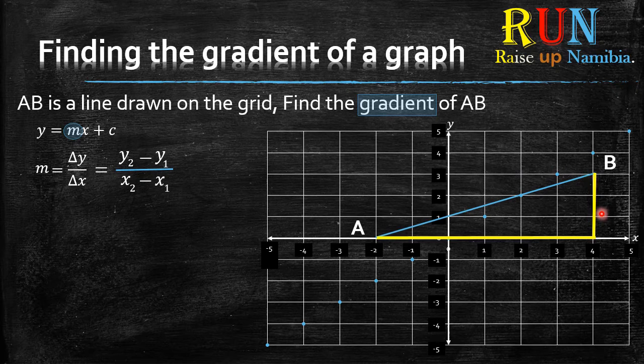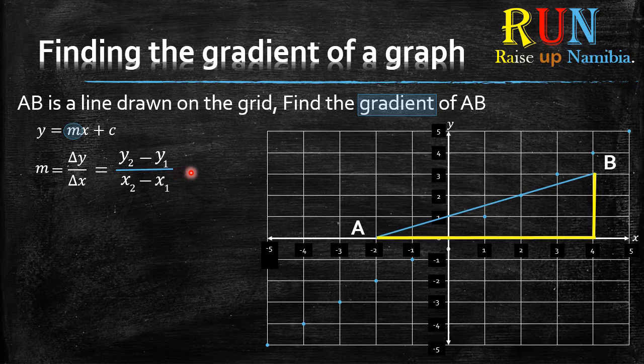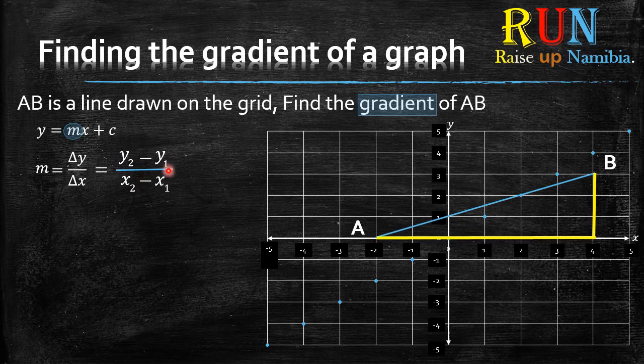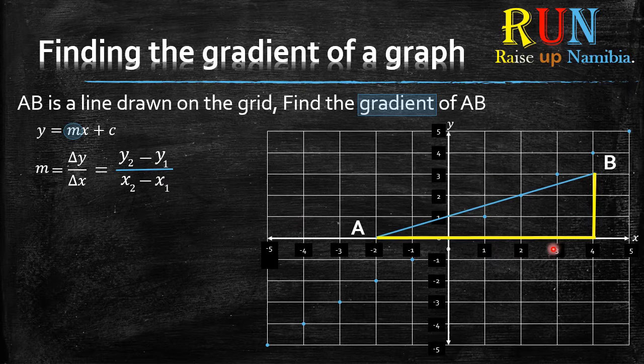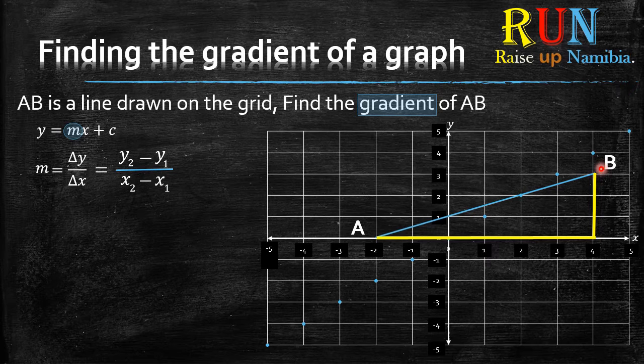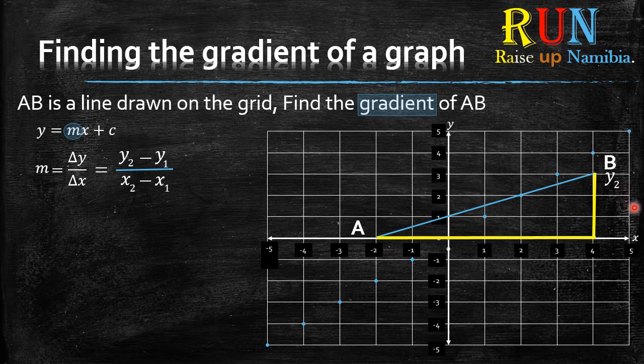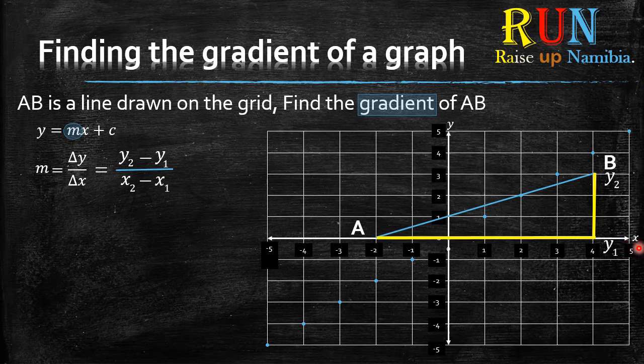Now, how do we use this formula? First, you need to label. You need to label the Y2, Y1, X2, and X1. On our triangle here, our highest point is here. So that's where we put on the Y axis, our highest point, we put the Y2. And then again, on the Y axis, the lowest point is where you put your Y1.